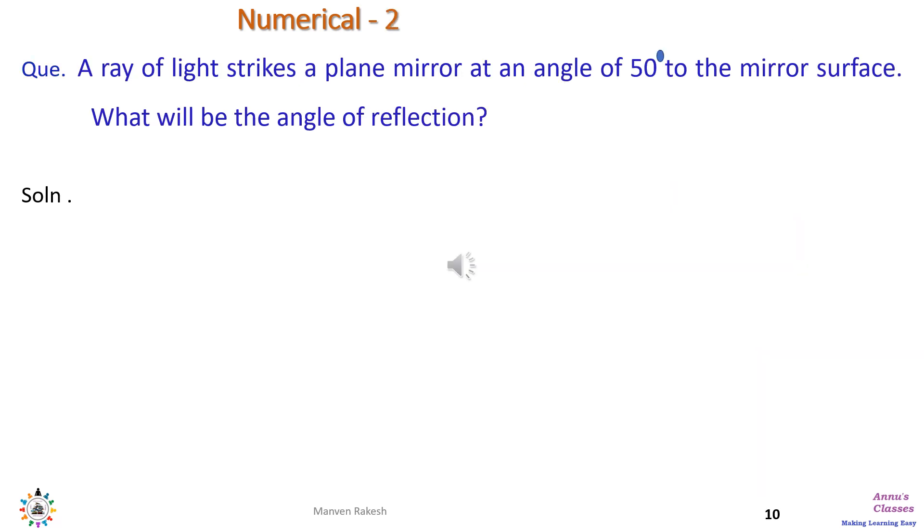Now let us come to the second problem. It says a ray of light strikes a plane mirror at an angle of 50 degrees to the mirror surface. What will be the angle of reflection?